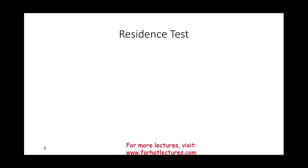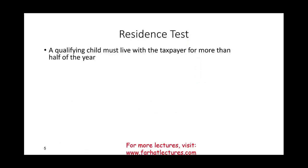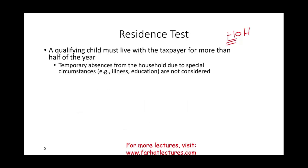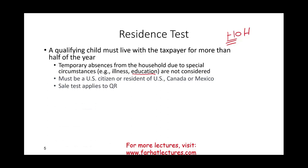Now let's talk about the residence test. A qualifying child must live with the taxpayer for more than half of the year. To qualify you as head of household, they have to live with you. Temporary absences are okay — for example, they could be in school, in college, or in a medical institution. They must be a U.S. citizen or a resident of the U.S., Canada, or Mexico. Those same rules apply to the qualifying relative as well.